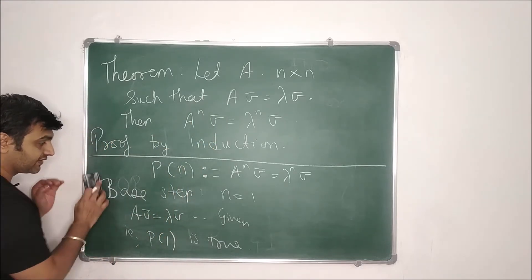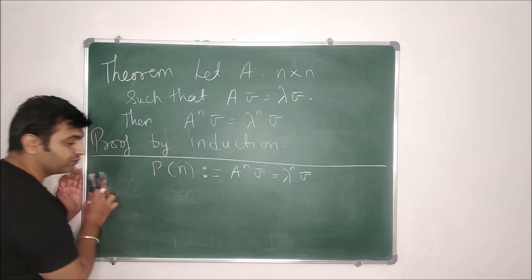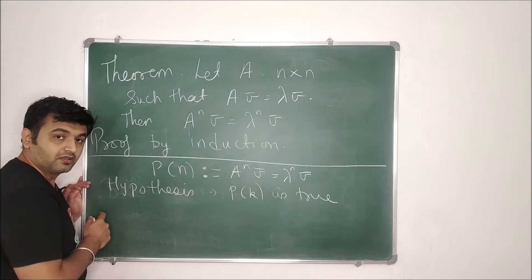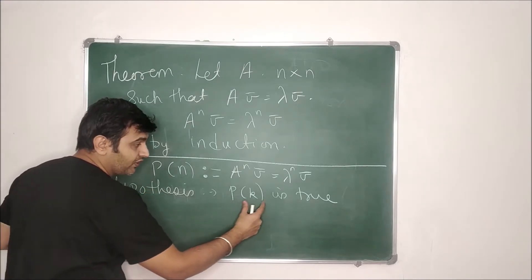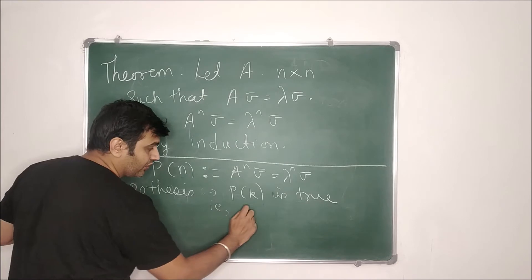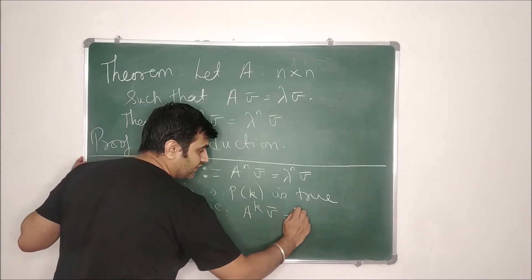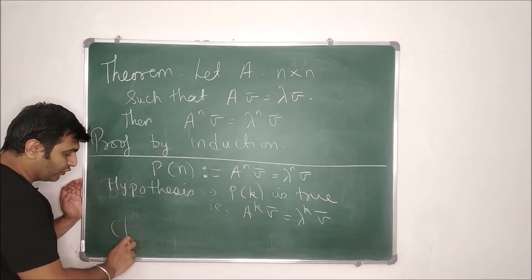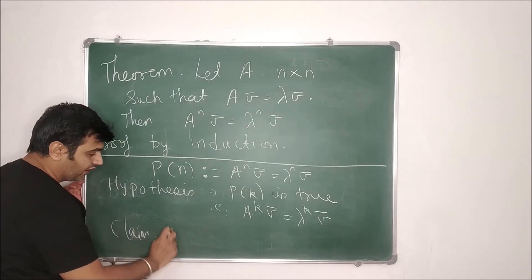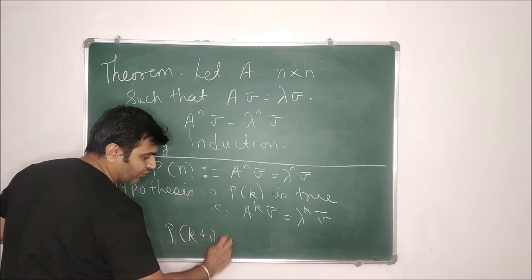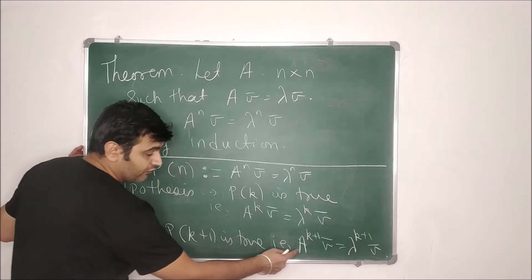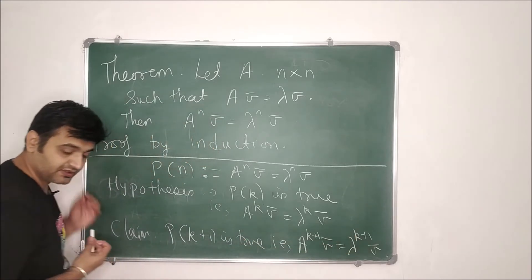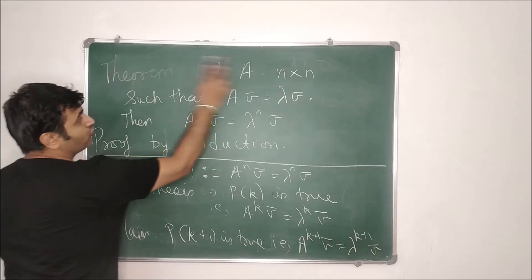Now the second step: we assume the induction hypothesis. Our induction hypothesis is that P(k) is true — that means A^k·V̄ = λ^k·V̄. Now what we want to prove is that P(k+1) is true, meaning A^(k+1)·V̄ = λ^(k+1)·V̄. That's what we want to show.